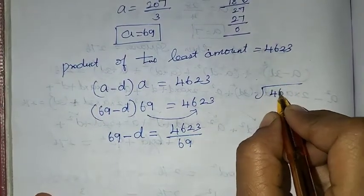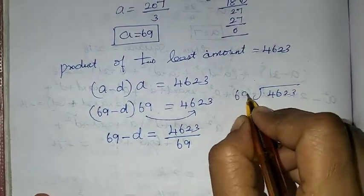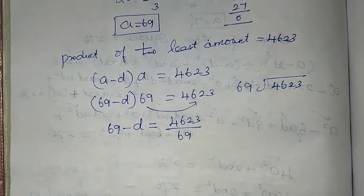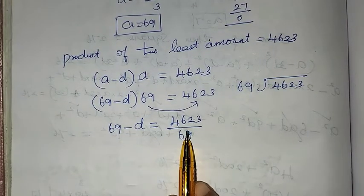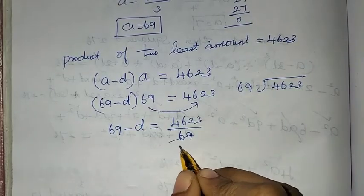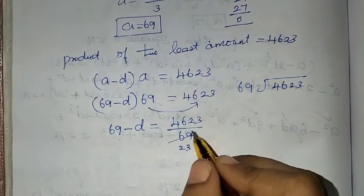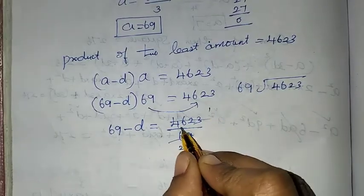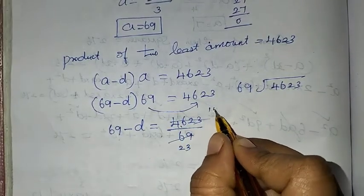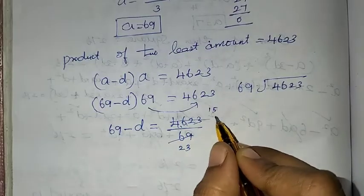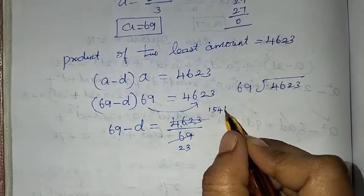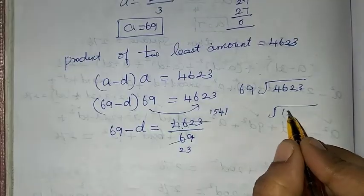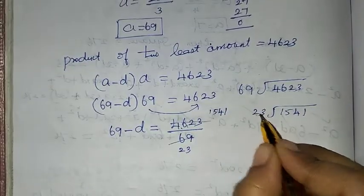So 69 - d = 4,623 ÷ 69. Now dividing 4,623 by 69: 69 goes into 4,623. Let's work through the division steps.